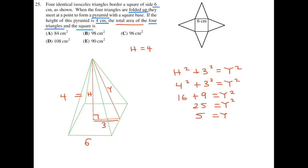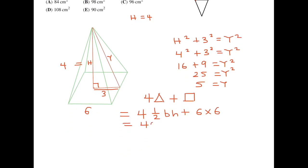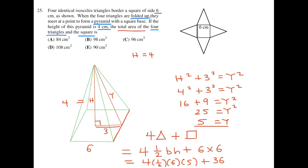So, what are they asking for? For the total area of the 4 triangles plus the square. So, the 4 triangles. Each triangle is 1 half base times height. And, the square is just 6 times 6, the area. So, 4 times 1 half. What is the base of this triangle? The base is from here to here, which is 6. And, the height is from there to there, which is, we figured out, 5. Plus 6 times 6, which is 36. So, this looks like 2 times 6 times 5, which is 60. Plus 36. And, therefore, this is 96. 96. So, 96 is the area that they're asking for. So, the answer here is C.